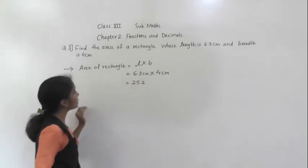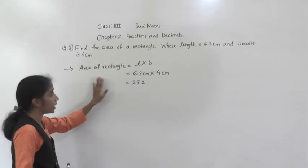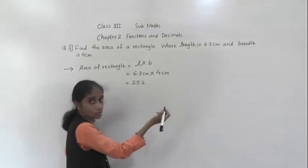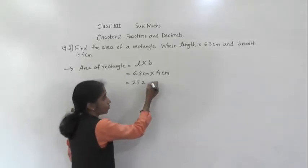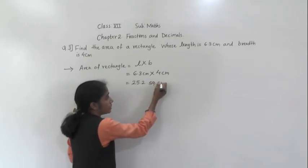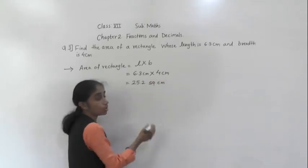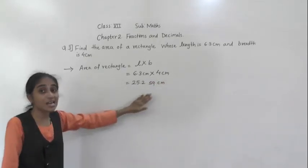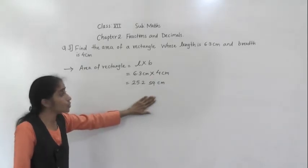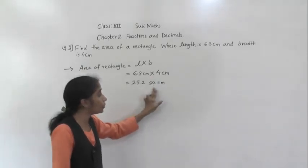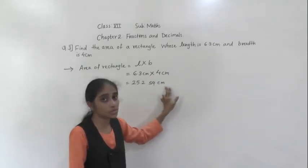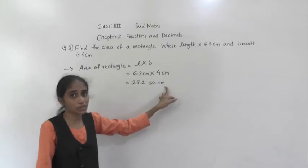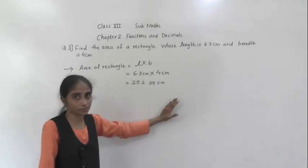Now what unit will it become? It is for area. So the unit will be square cm or cm². You can write square cm or cm² — it is for area. So we have to write the unit square cm. If it is for the perimeter, then only cm will come.